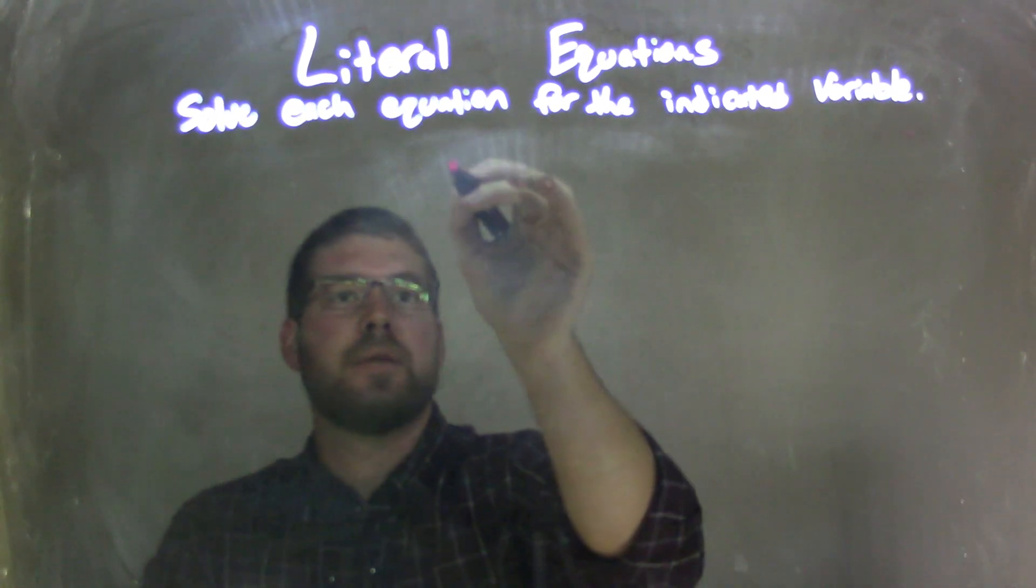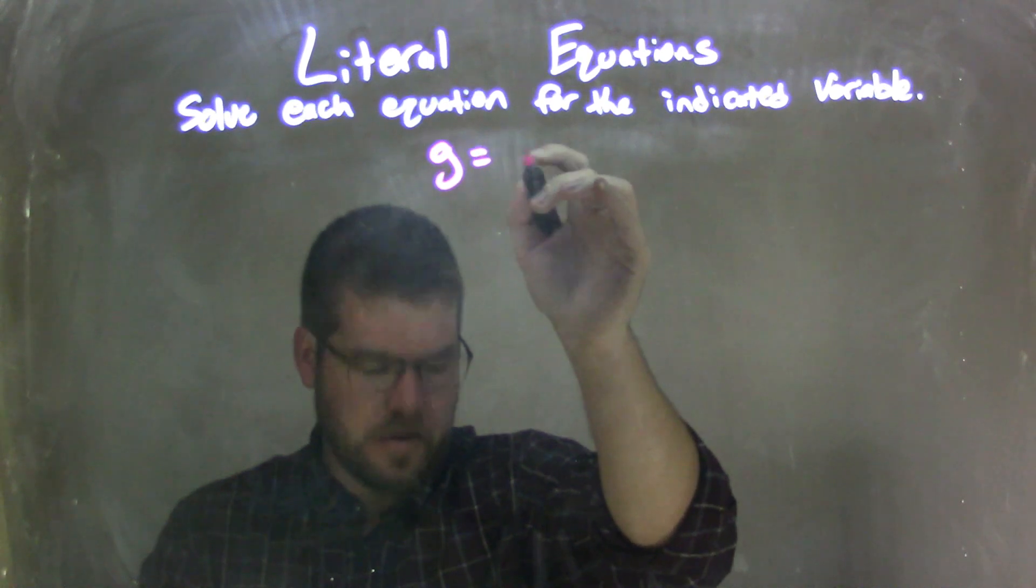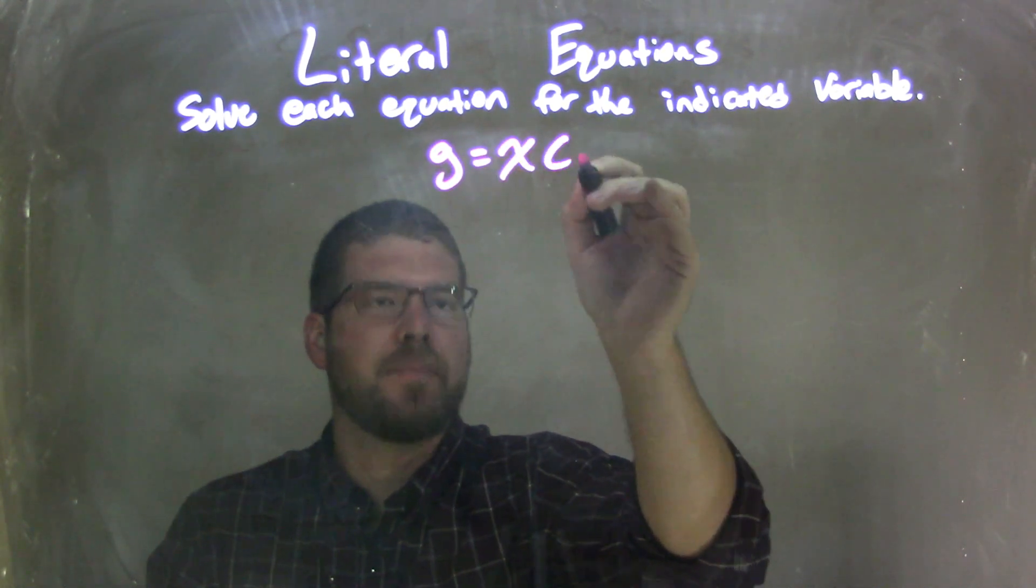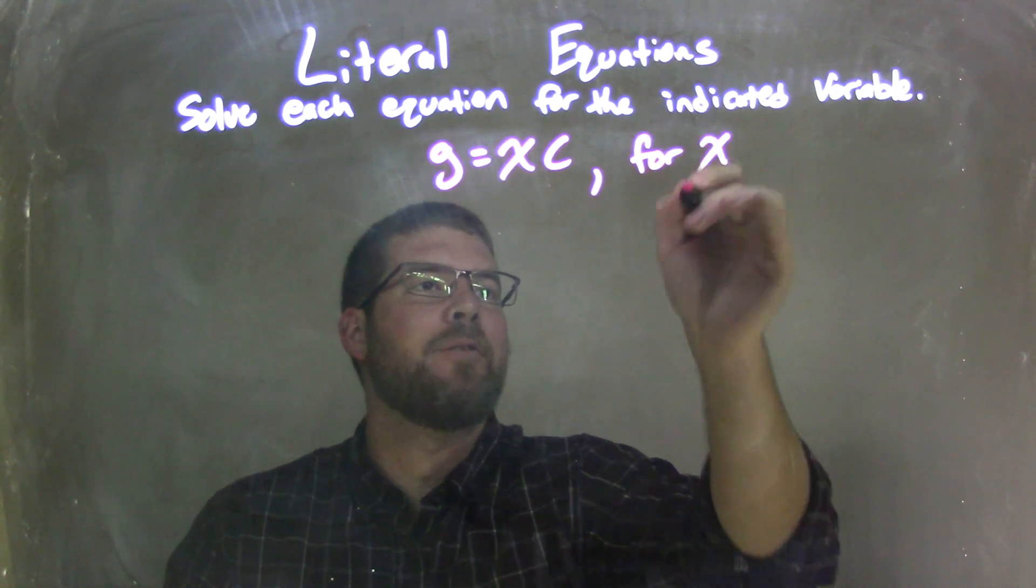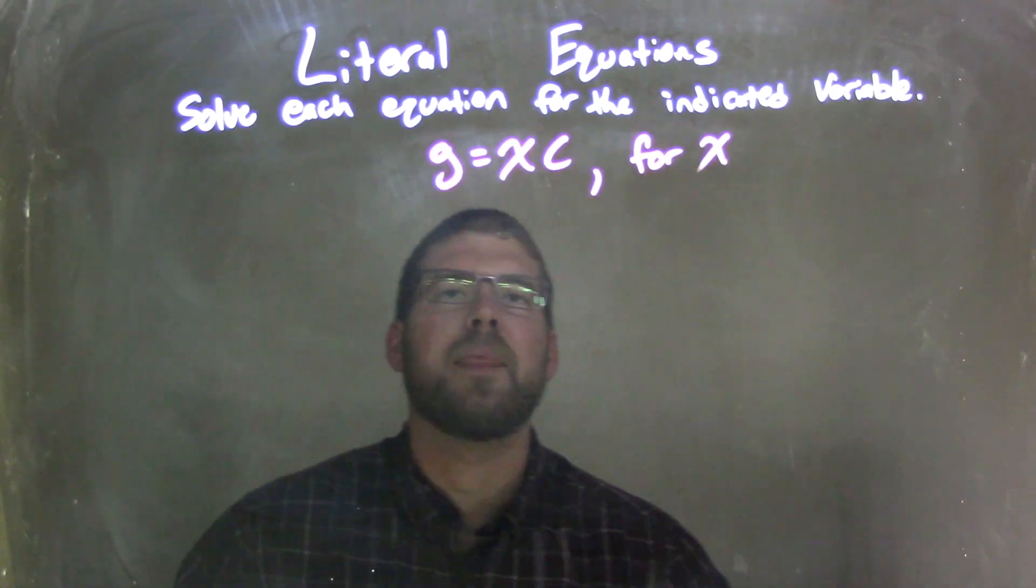So if I was given this equation, g equals x times c, cross country if you will, and we need to solve that for x. Hopefully you get that reference, okay?